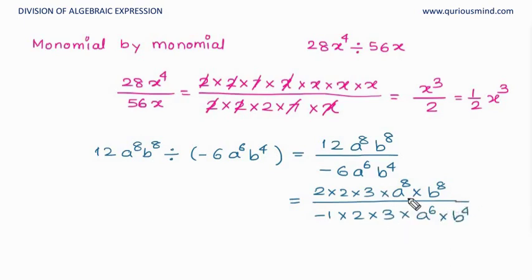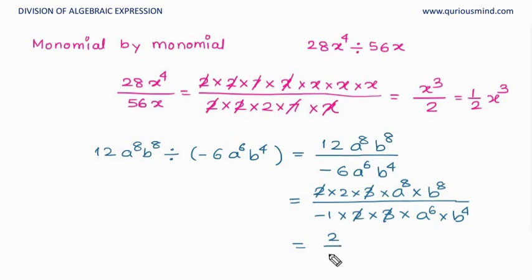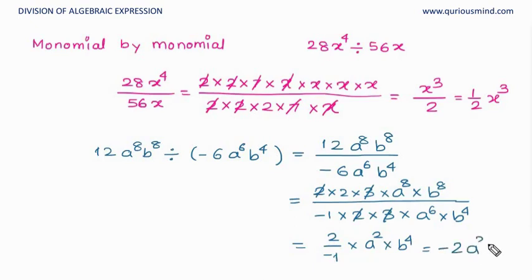We know the division of exponents. We cancel out the common factors: 2 and 2, 3 and 3. Then a⁸ ÷ a⁶ = a^(8−6) = a², and b⁸ ÷ b⁴ = b^(8−4) = b⁴. So this gives 2 over −1, times a² times b⁴, which equals −2a²b⁴. That is our answer.